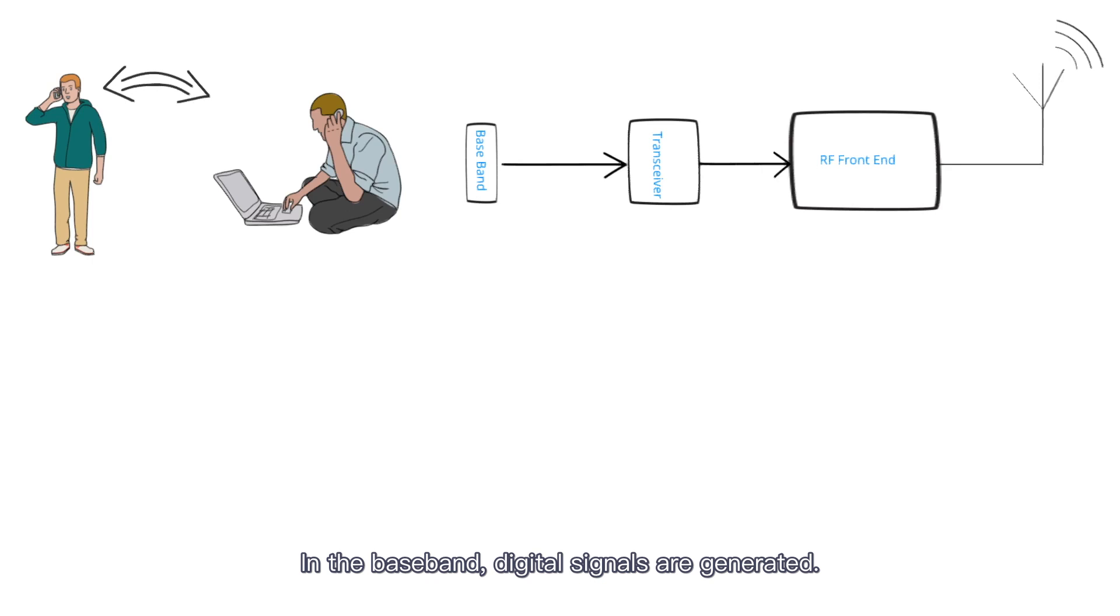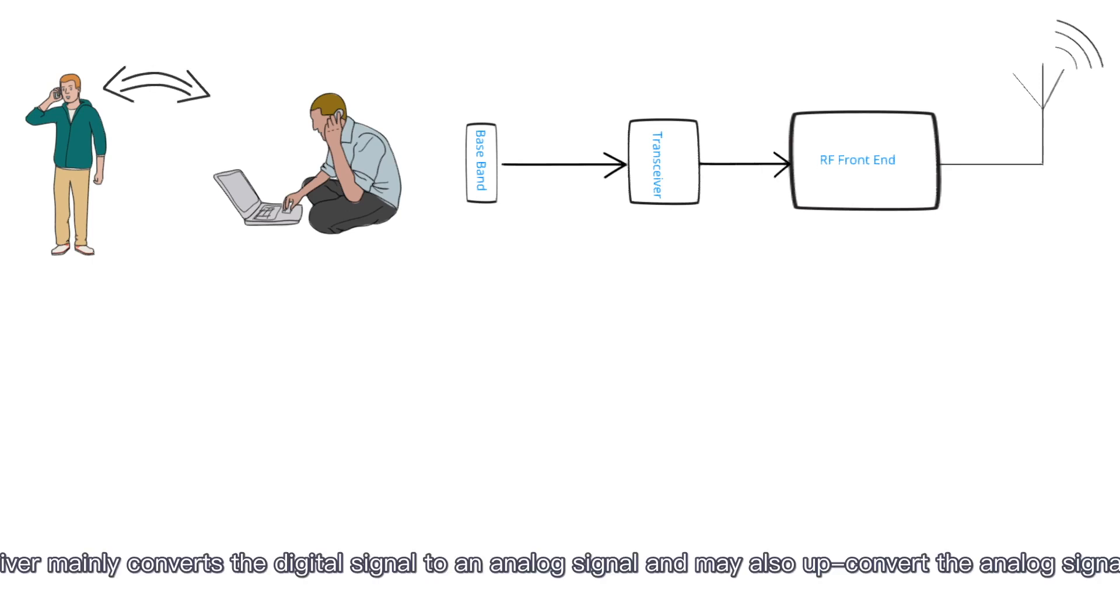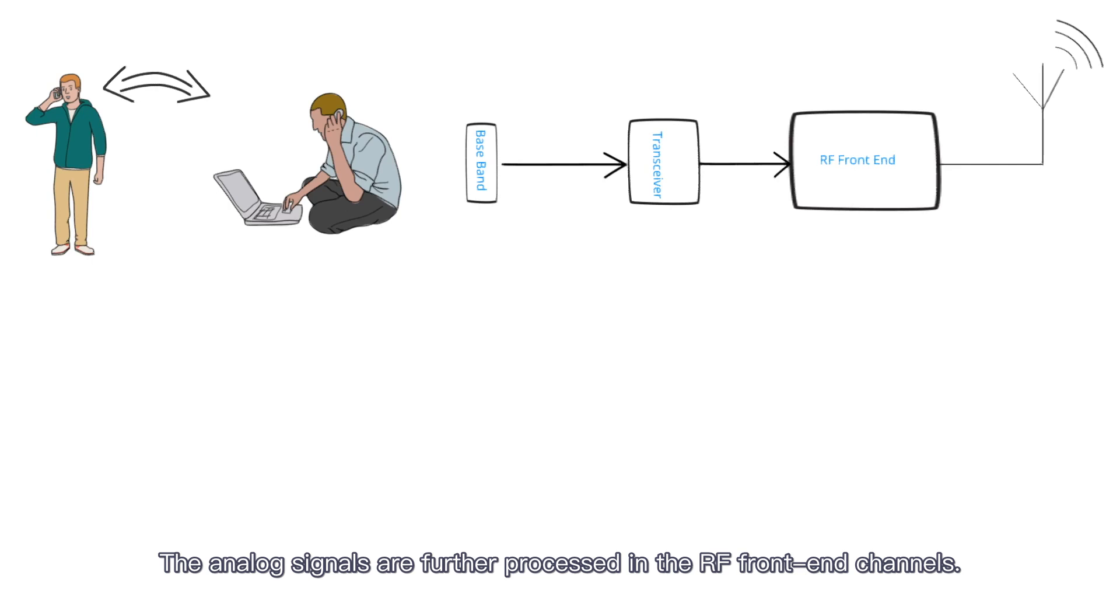In the baseband, digital signals are generated. The transceiver mainly converts the digital signal to an analog signal and may also up-convert the analog signal frequency. The analog signals are further processed in the RF front end channels.